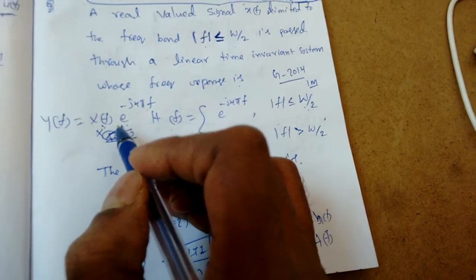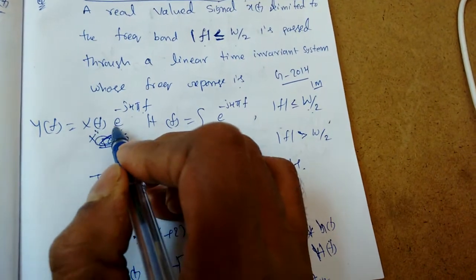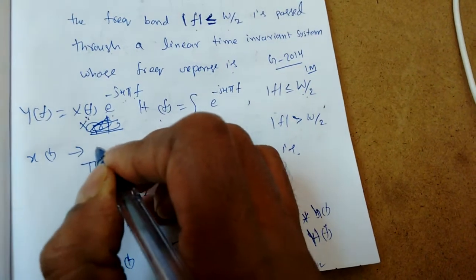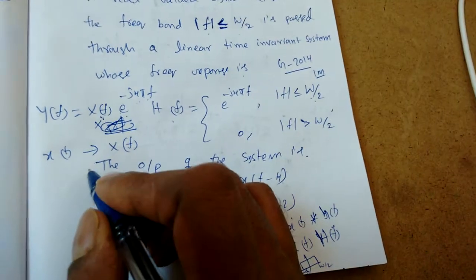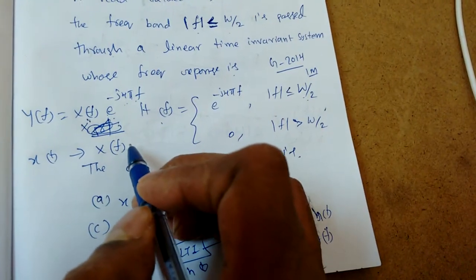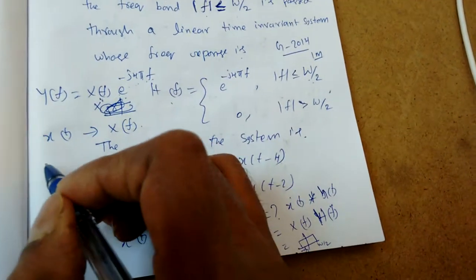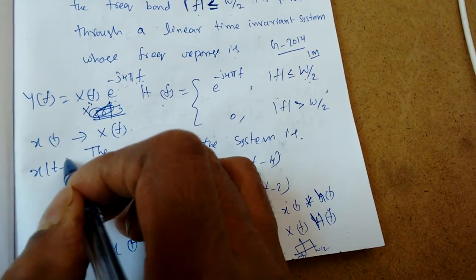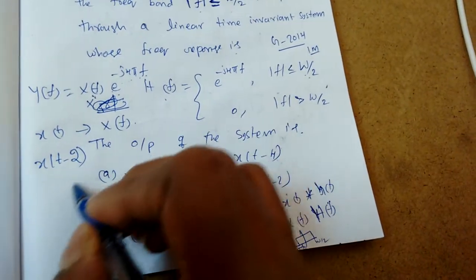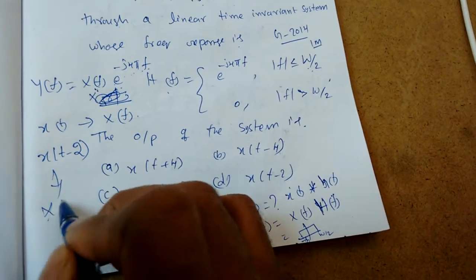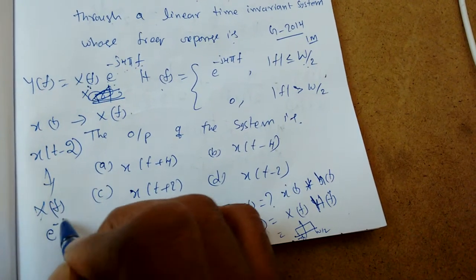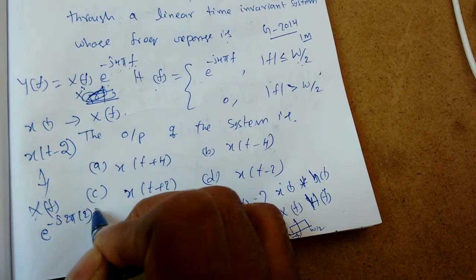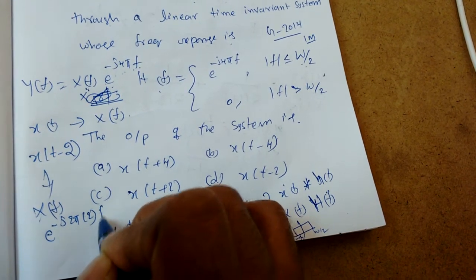So Y(f) = X(f) · e^(−j·4πf). Now what does this mean? If I know x(t) whose Fourier transform is X(f), then to get X(f) · e^(−j·4πf), I need to apply a time shift. The Fourier transform of a shifted signal x(t − t₀) gives X(f) · e^(−j2πf·t₀), where t₀ = 2.